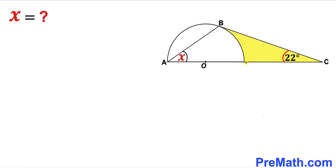Welcome to pre-math. In this video we have got triangle ABC along with a semicircle, such that O is the center of this semicircle. BC is tangent to this semicircle, AB is the chord, and furthermore angle C is 22 degrees. Now we are going to calculate angle X.